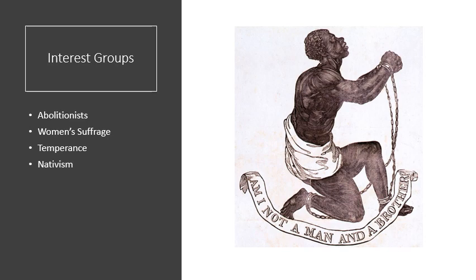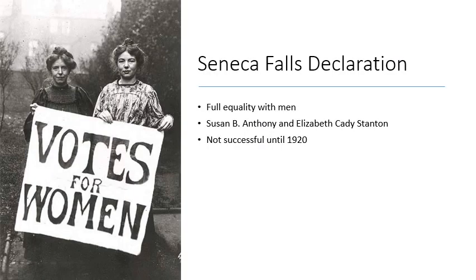There were also nativist movements to stop immigration, particularly Irish and German immigration, with groups living in the United States wanting to stop immigrants from coming. A major milestone for women's suffrage was the Seneca Falls Convention in 1848, out of which came the Seneca Falls Declaration. Led by Susan B. Anthony and Elizabeth Cady Stanton, this group of middle and upper class women sought full equality with men, including voting rights. While influential, they were not successful in gaining women's suffrage until 1920.